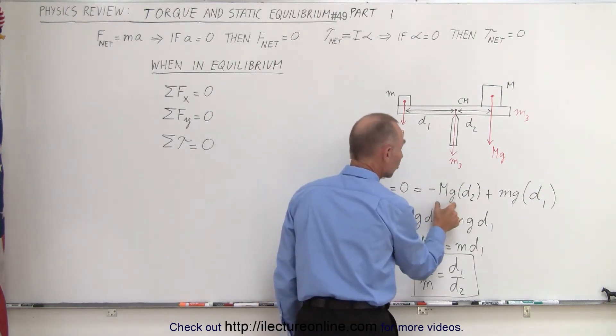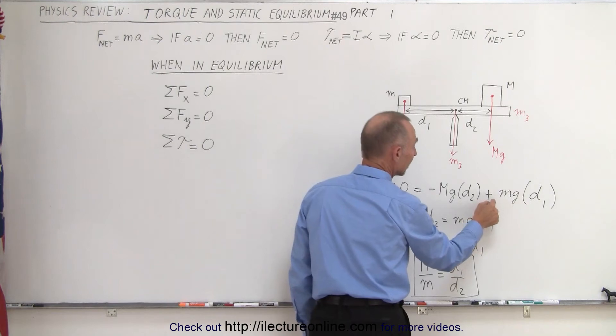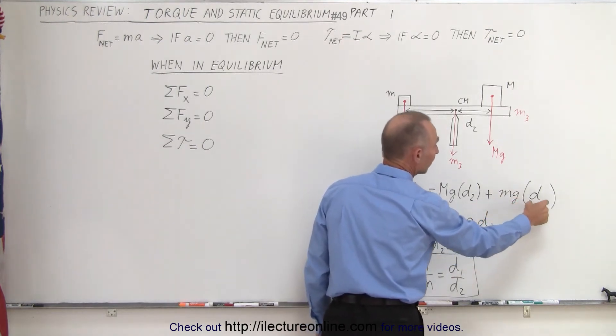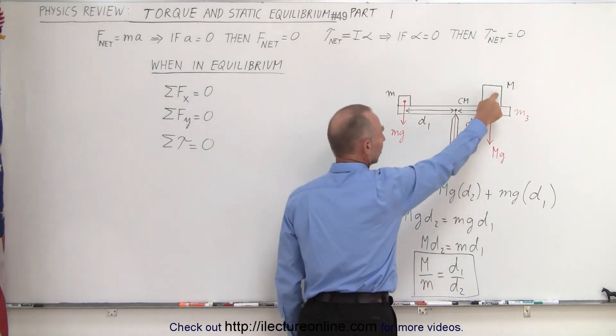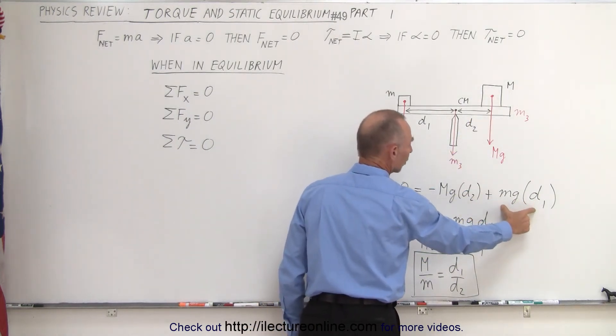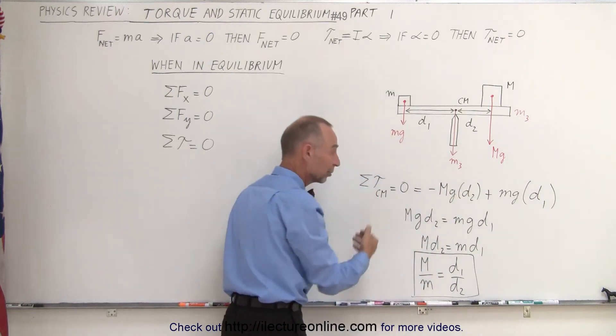So we have force Mg times distance, and force small Mg times distance. In other words, the torque caused by the large mass must balance out the torque caused by the small mass, so they must add up to zero.